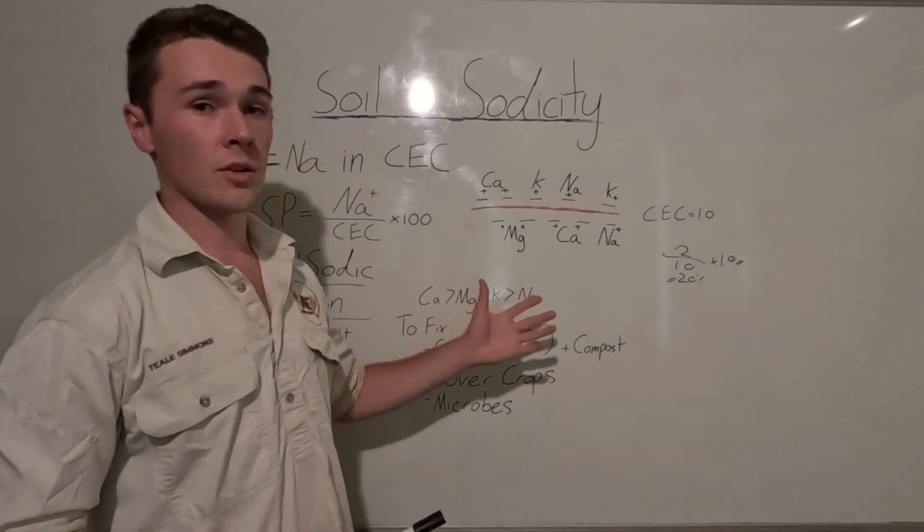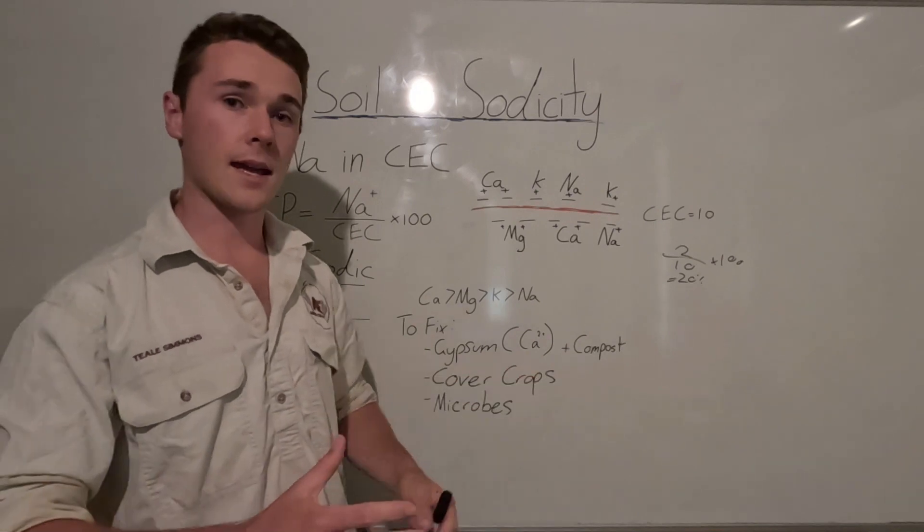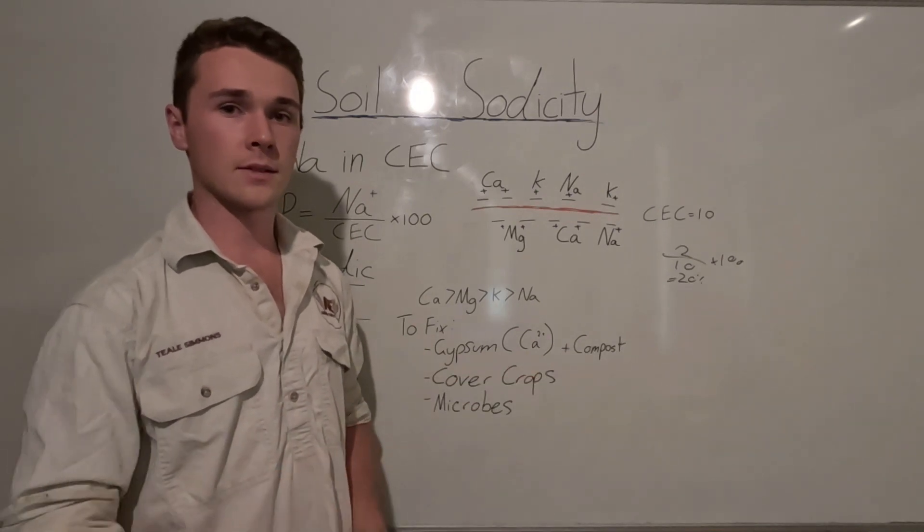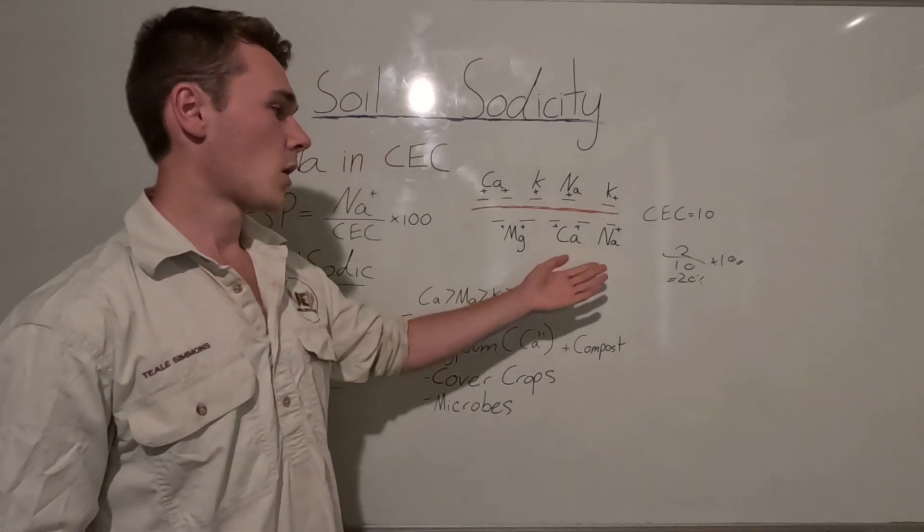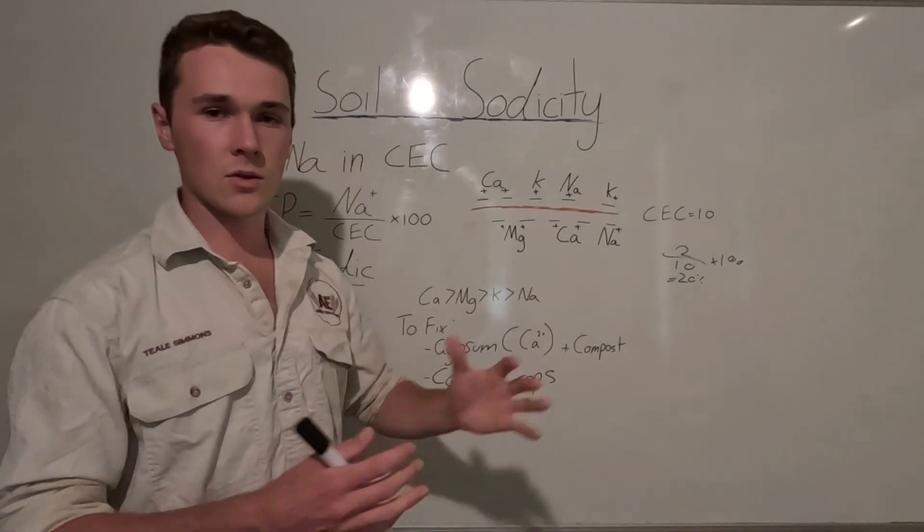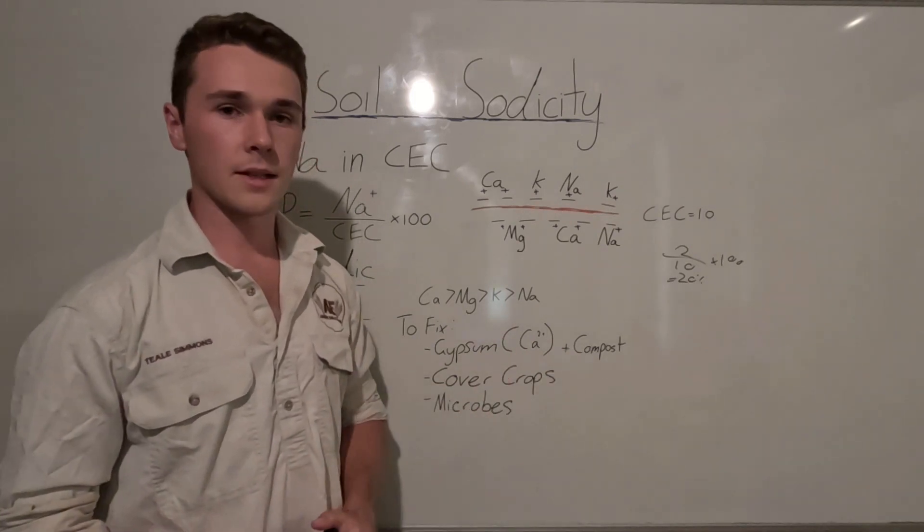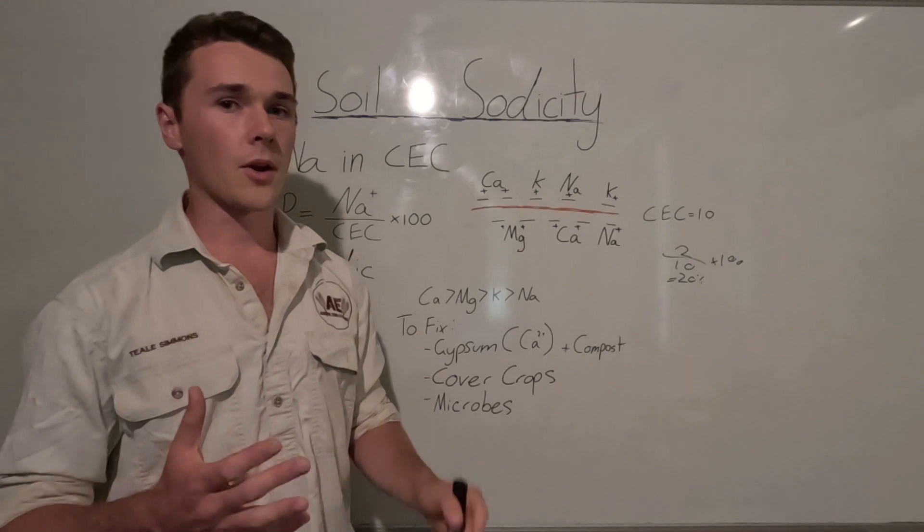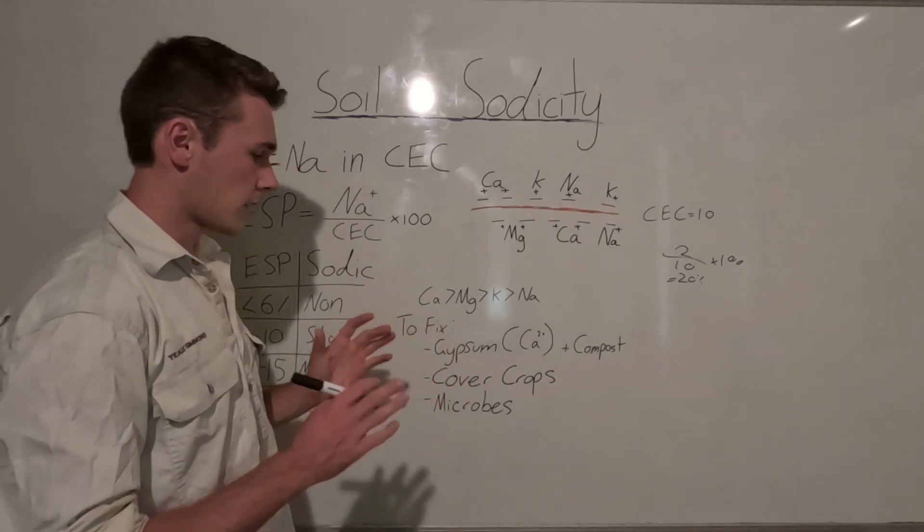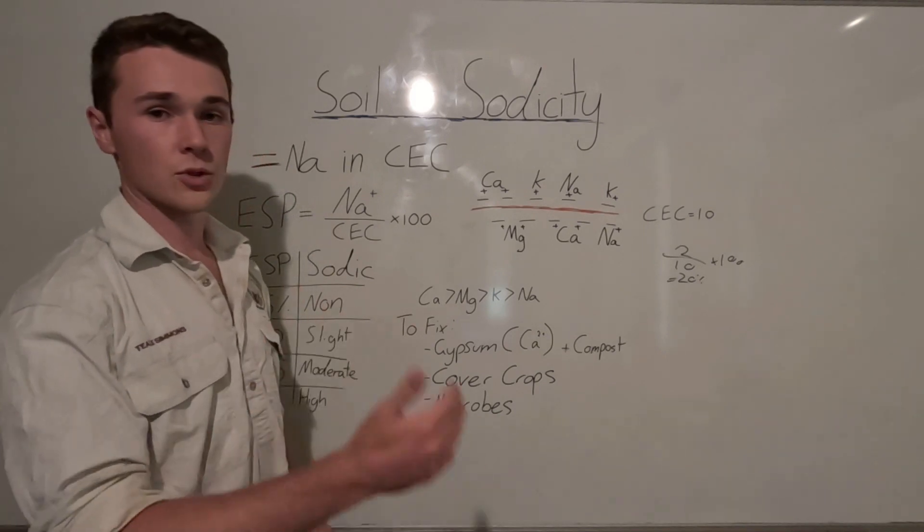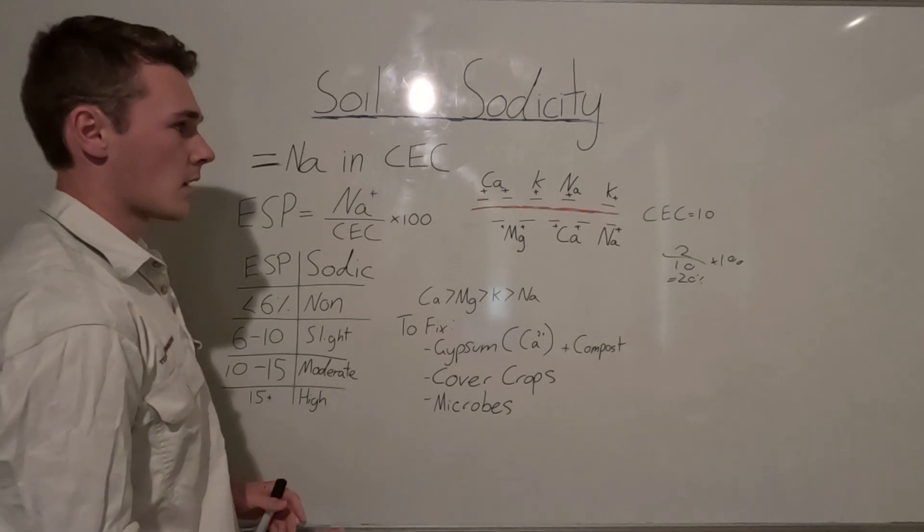Now you might be wondering, how did the sodium get there in the first place? And that's simply just because of the rocks in that particular area just have higher amounts of sodium in them naturally. And then when they decompose, we get high amounts of sodium. So most of the time it's completely natural for these soils to be sodic, but ideally we don't really want them to be sodic because it's going to interfere with our production.